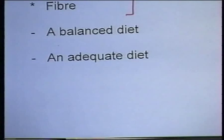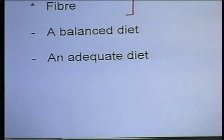A balanced diet is a diet in which there is a good balance of carbohydrates, proteins, fats, vitamins, minerals, water, and fiber. These components must be present in the right proportions. That gives us the idea of a balanced diet.